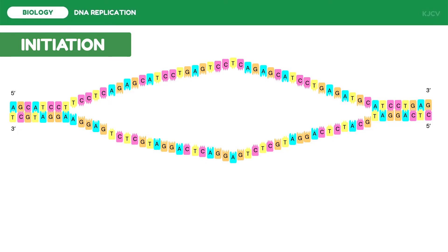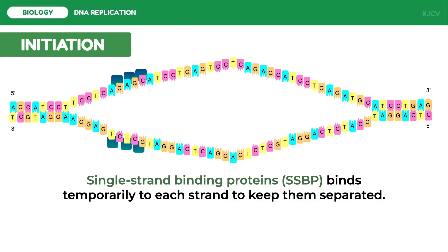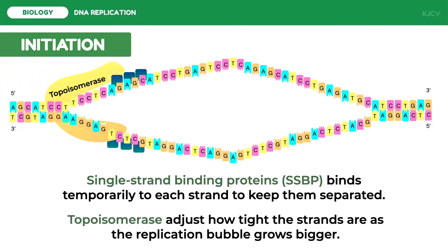A special set of proteins called single-stranded binding proteins, or SSBP, attaches to each strand to keep them from recoiling. Another enzyme called topoisomerase helps in the unwinding of the DNA strand and adjusts the size of the replication bubble as it grows bigger. Now that the DNA is open, it is ready for the second step: elongation.